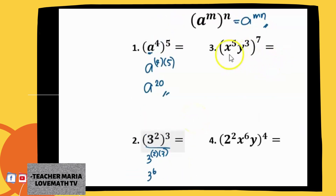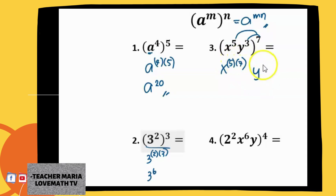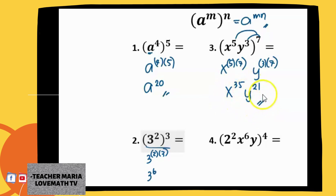For number 3, we have x raised to 5, y raised to 3, and both of these are raised to 7. Since you have 2 variables, you have to distribute this power to both exponents, so you multiply 7 to both 5 and 3. You will have x raised to 5 times 7, and y raised to 3 times 7. 5 times 7 is 35, and 3 times 7 is 21. So the final answer is x raised to 35 and y raised to 21.